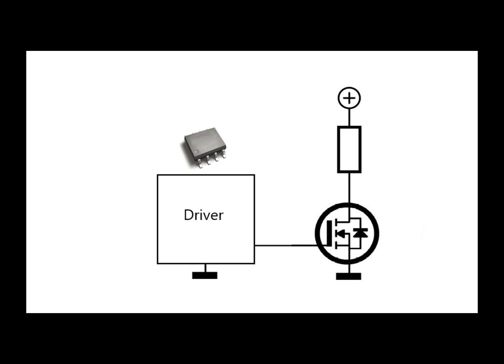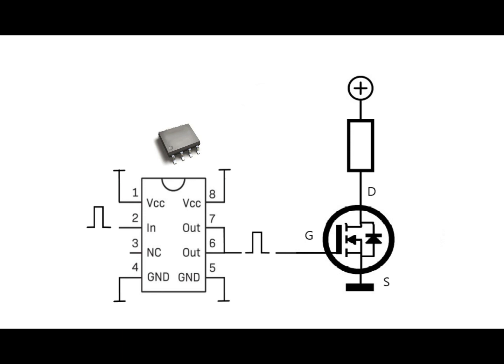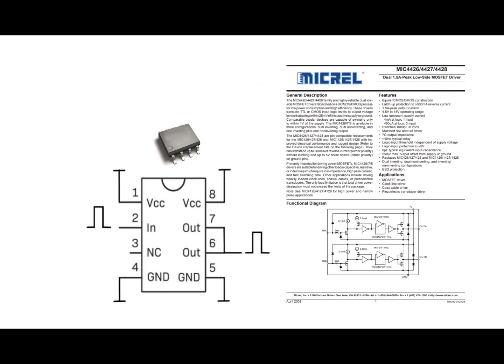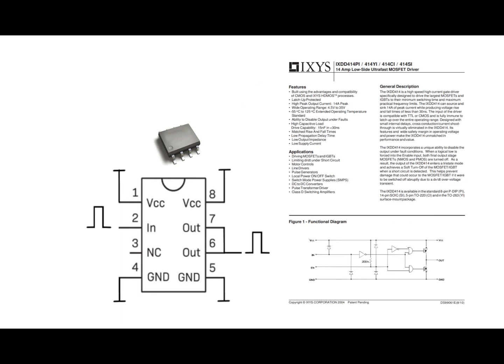These driver ICs accept some logic level signal at the input and output high peak current pulses which charge the MOSFET gate capacitance quickly. Some of the driver ICs I've used in the past are for example the MIC4426 which is a dual driver with three amps of peak current, or the UCC27321 which has nine amps of peak current, or the IXDD414 which has 14 amps of peak current.